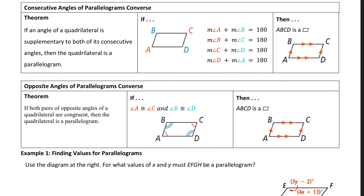The next theorem involves consecutive angles. If an angle of a quadrilateral is supplementary to both of its consecutive angles, then that quadrilateral is a parallelogram. So if A plus B is 180, B plus C is 180, C plus D is 180, and D plus A is 180, then it's a parallelogram. A must be supplementary to both B and D, because A and B and A and D are same-side interior angles, which makes those opposite sides parallel and the quadrilateral a parallelogram.